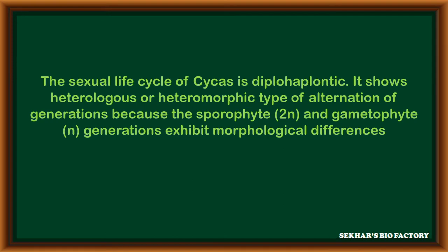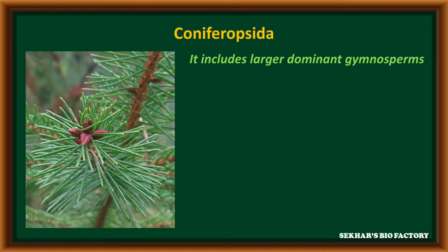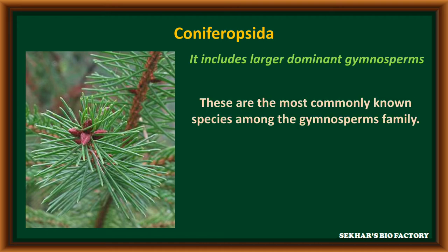Cycas shows heterologous or heteromorphic type of alternation of generations because the sporophyte and gametophyte exhibit morphological differences. The second group in gymnosperms is Coniferopsida, which includes larger, dominant gymnospermic plants. These are the most commonly known species among gymnospermic families.